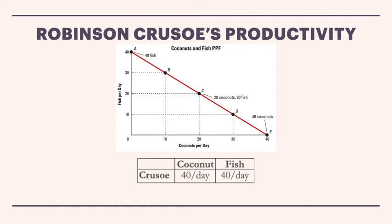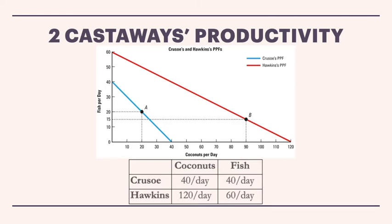Now that's great — he's by himself — but we're talking about trade here. So to illustrate how and why trade makes people better off, we need to add in another castaway: someone else on the desert island that Robinson could trade with. His name is Jim Hawkins. Here's Jim Hawkins' PPF. Now we have two people on the PPF.